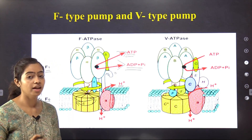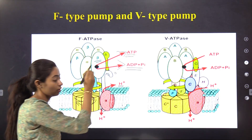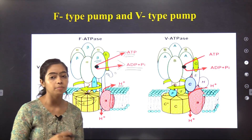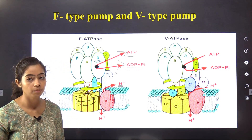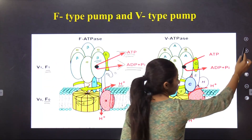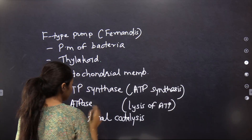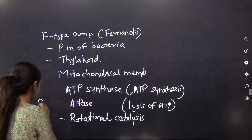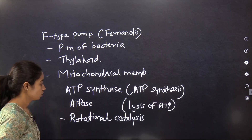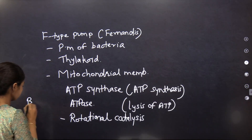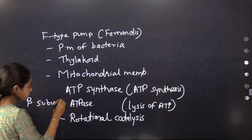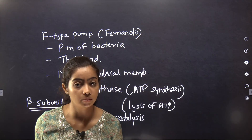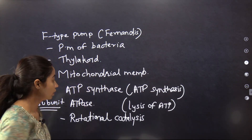In the F-type ATPase, the ATPase activity is present in the beta subunit. This is an important exam question: which component of the F1 particle has ATPase activity? The answer is the beta subunit. ATPase activity is present in the beta subunit of F-type ATPase.